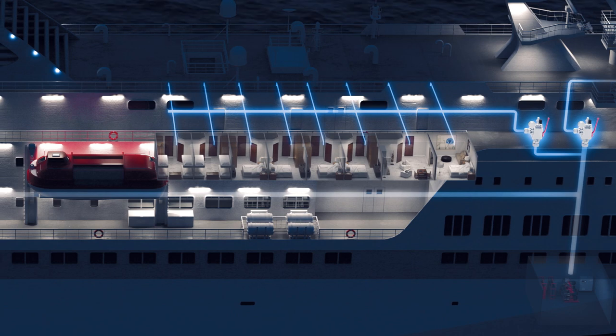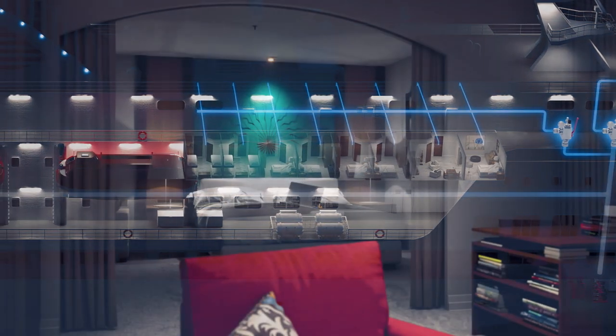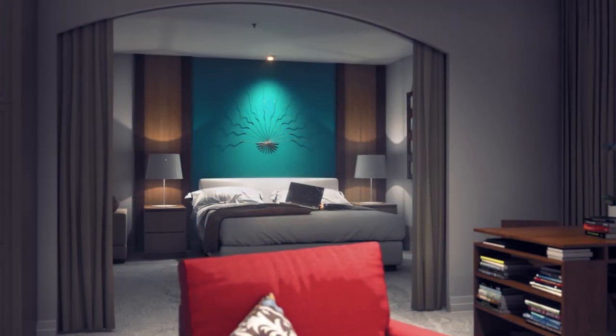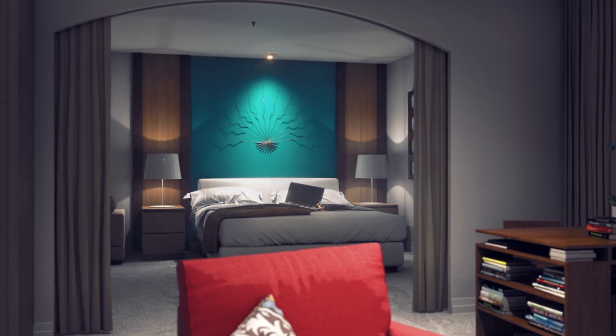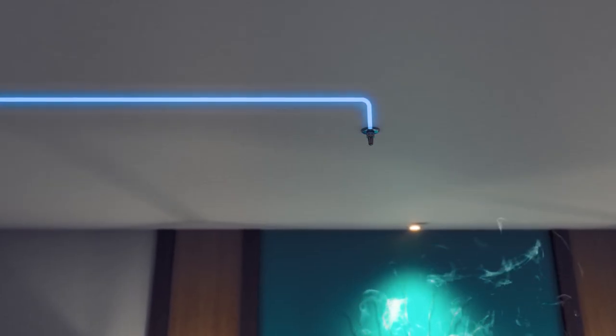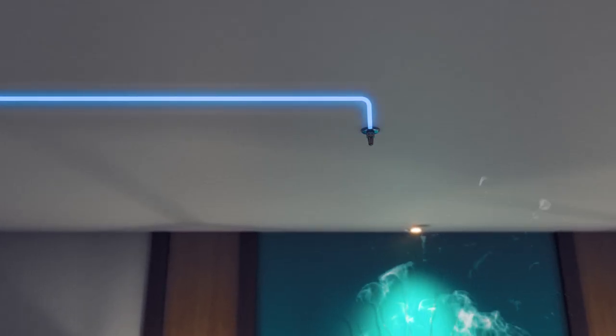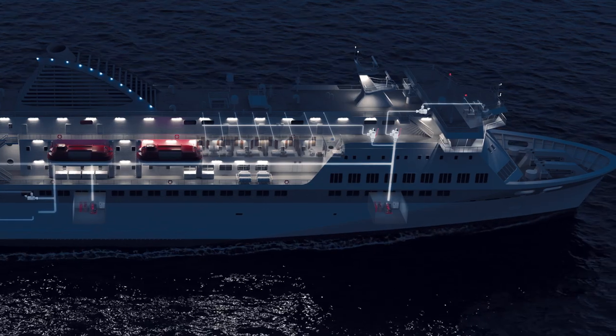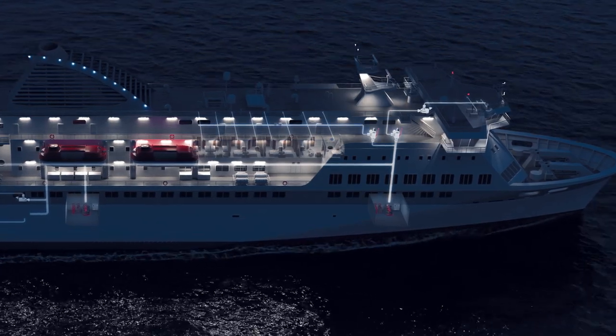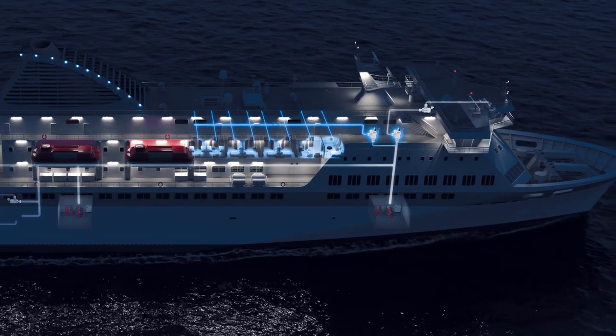In accommodation, public areas, and service spaces, the tube network is filled with water at a constant pressure of 25 bar for immediate action in case of fire. The system is divided into sections, each equipped with an independent section valve.